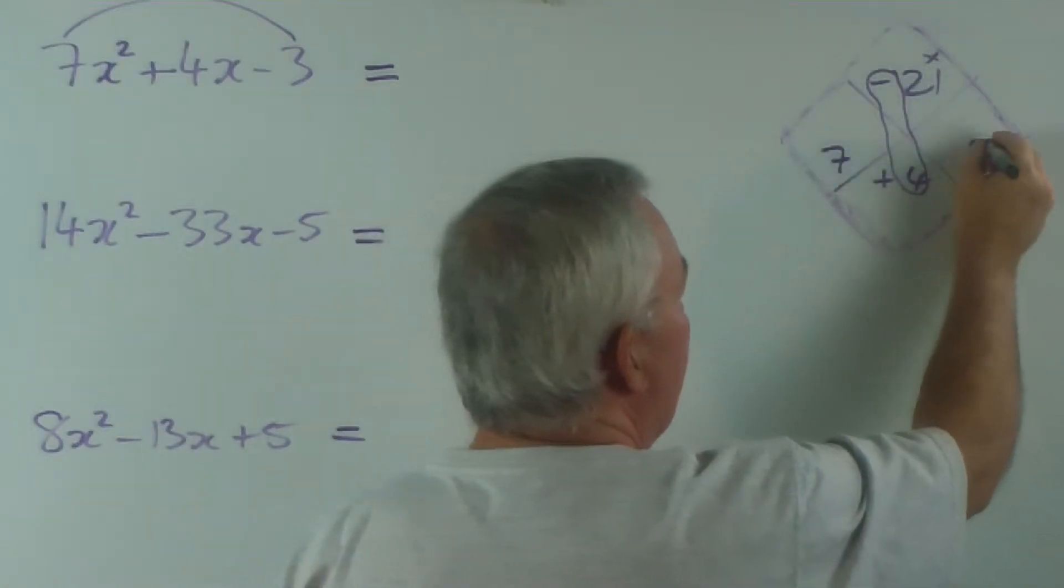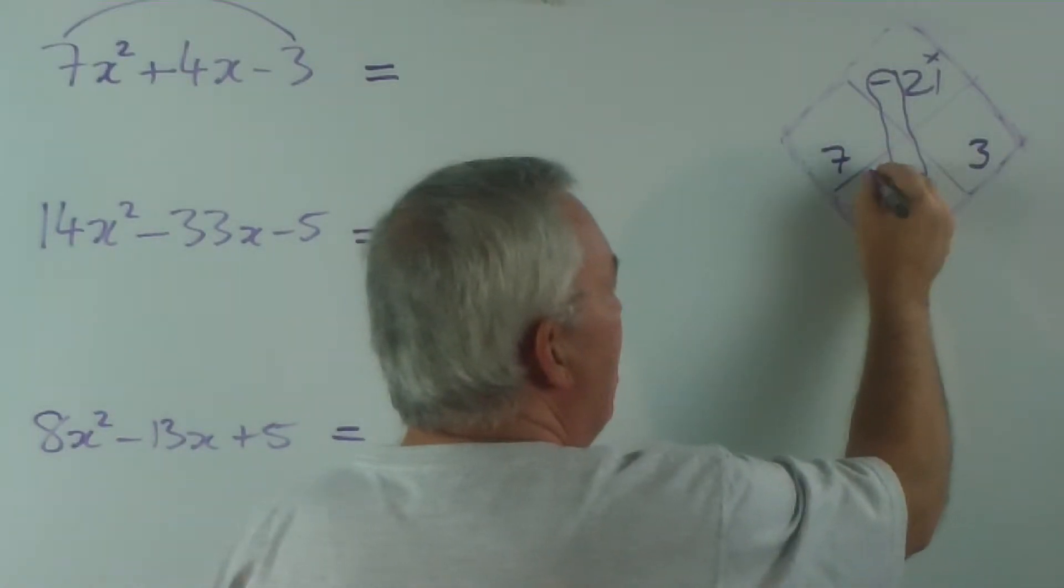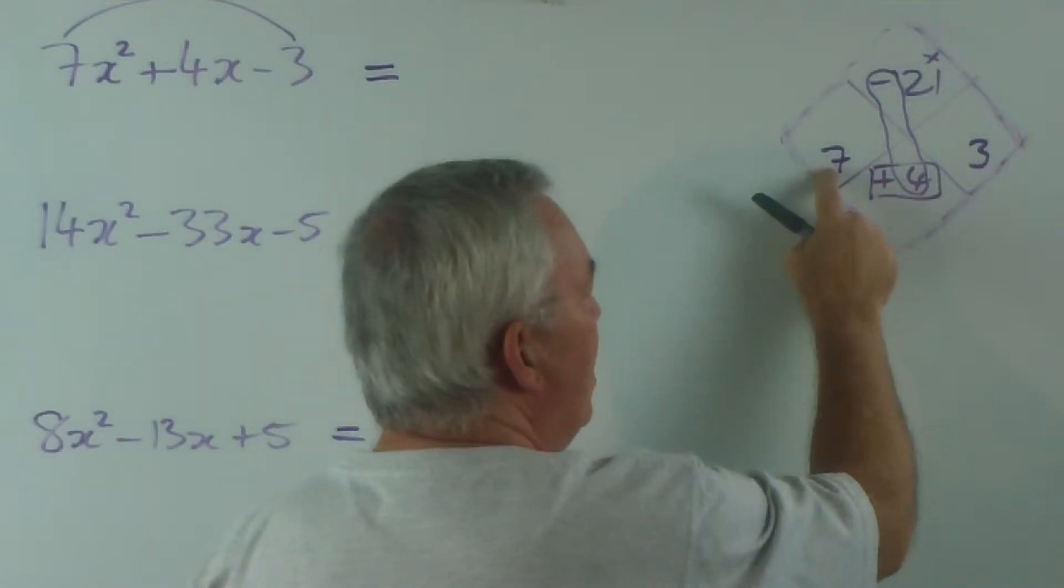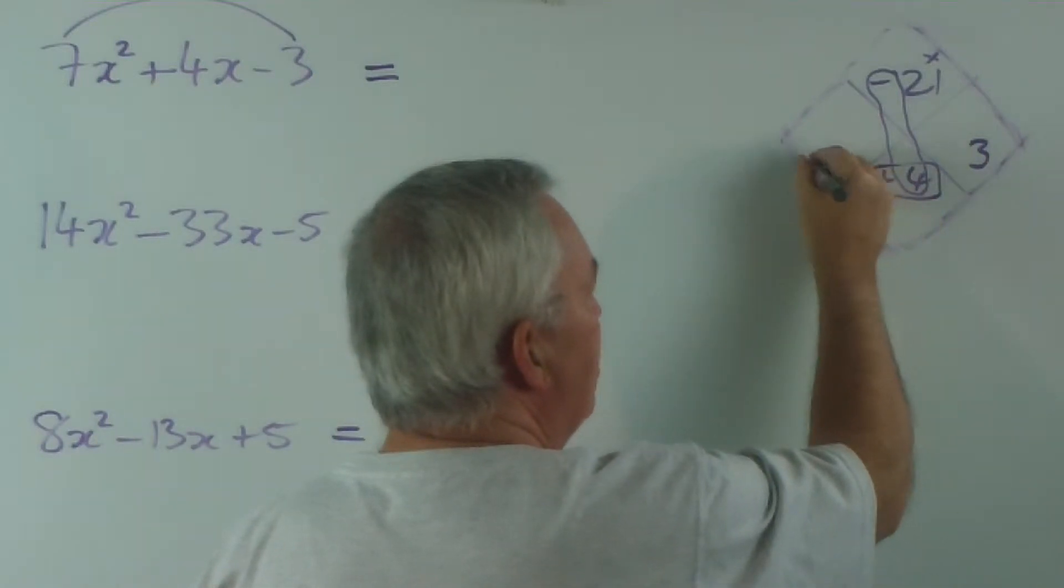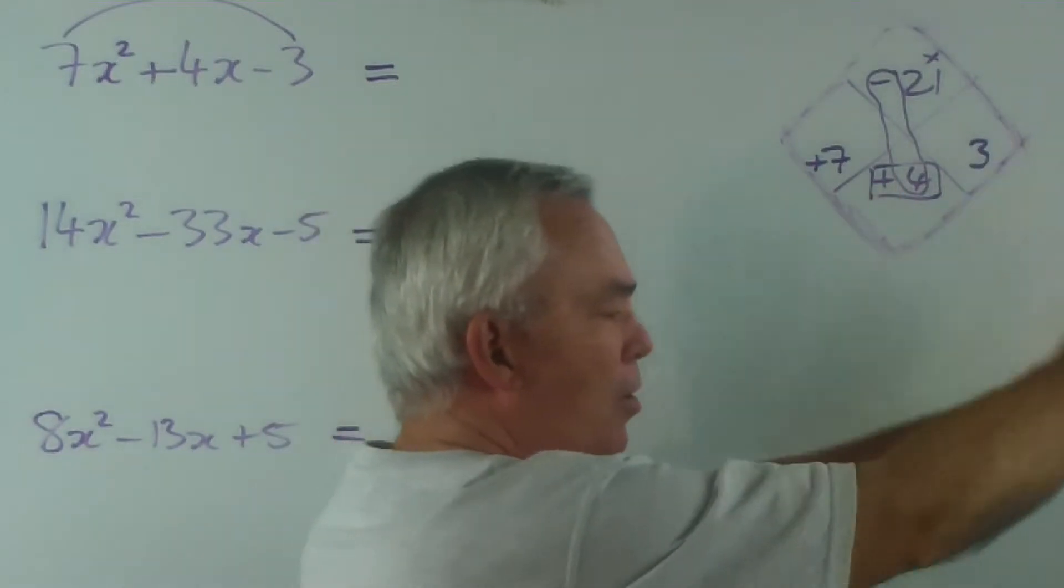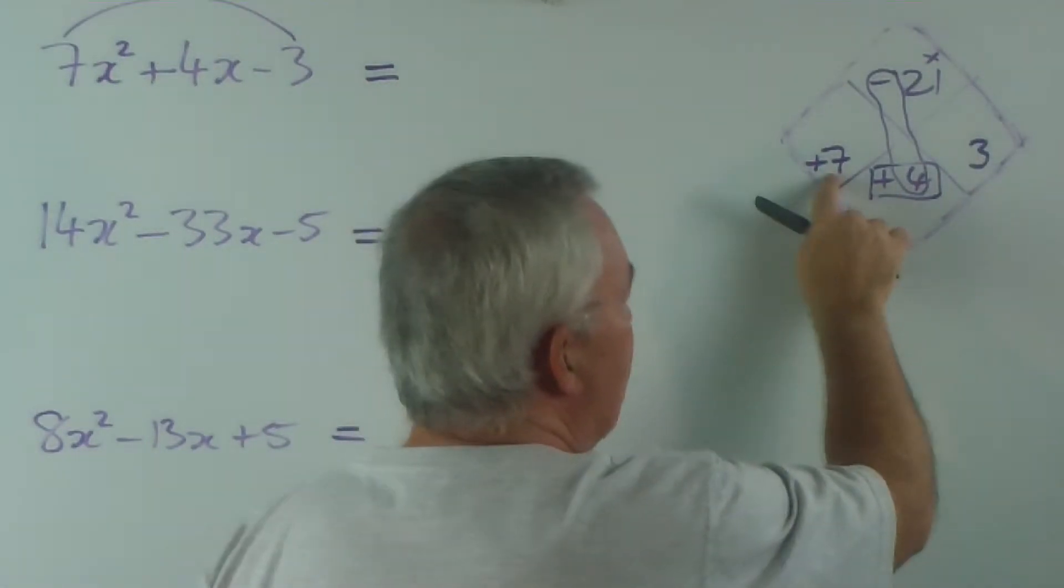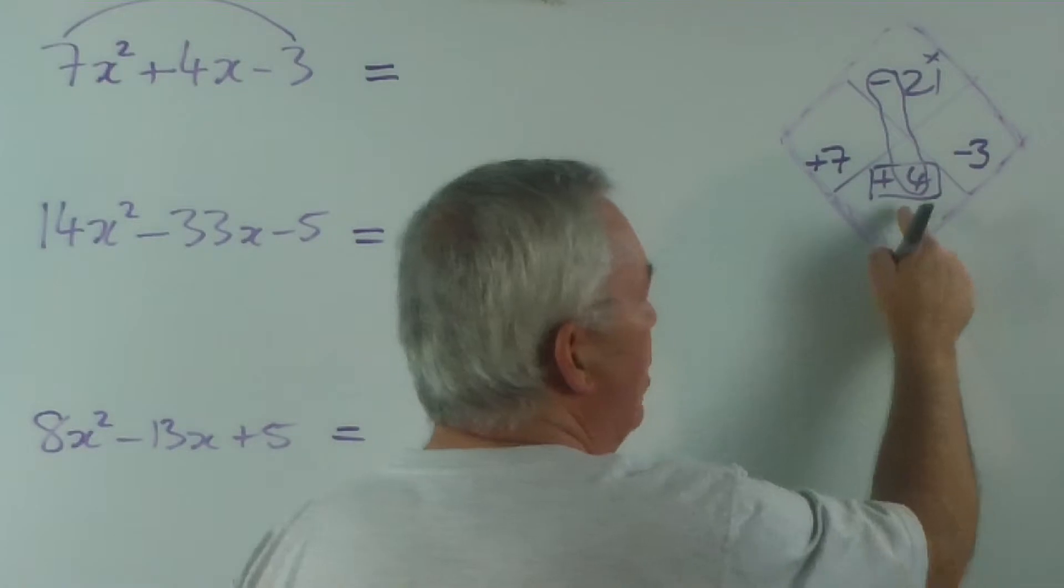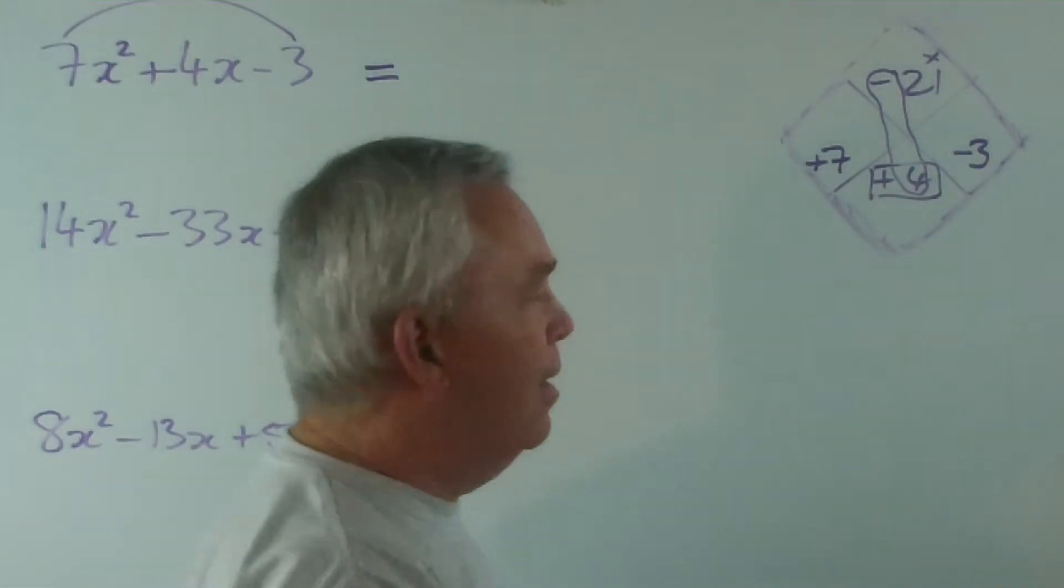And they write the 7 and the 3 here. How do we get a plus 4? Well, the big number has to have the same sign - that gives us up in the positive numbers - and starting from plus 7, if we go down 3, we'll get to plus 4.